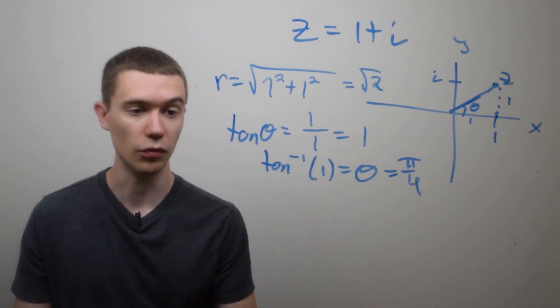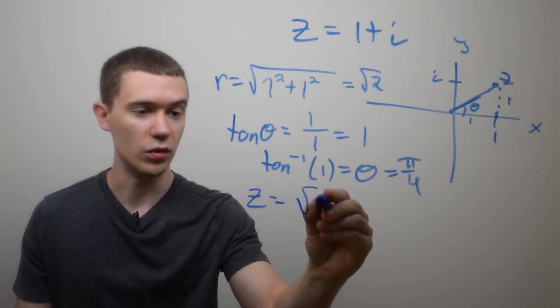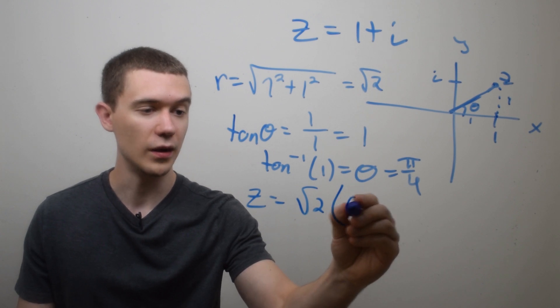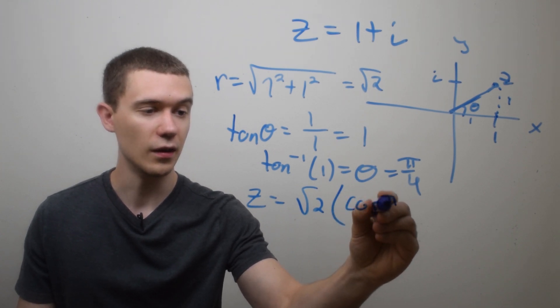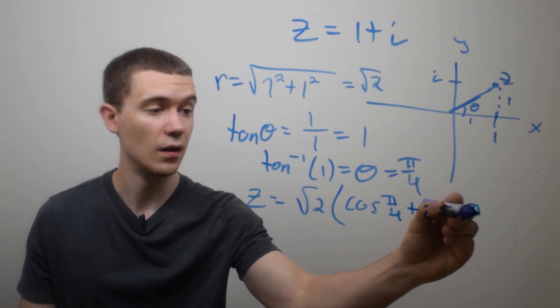So now that I know what r is and I know what theta is, I can write this in polar form. I can have z equals r, which is square root 2, times the quantity cosine theta, which is pi over 4, plus i sine pi over 4.